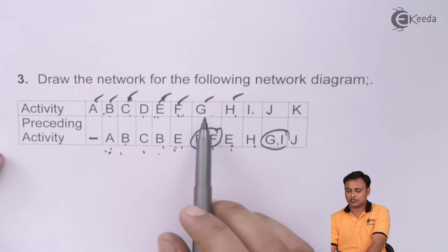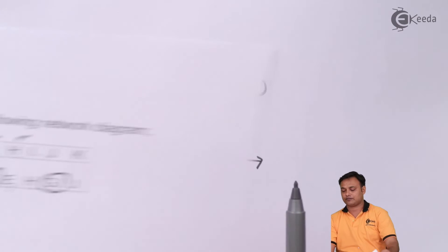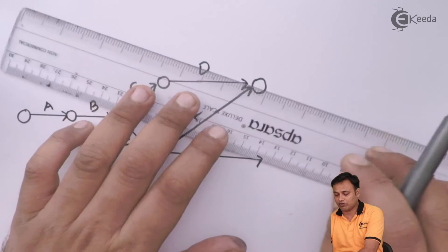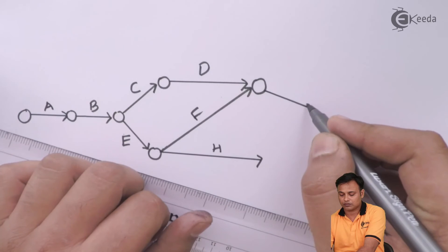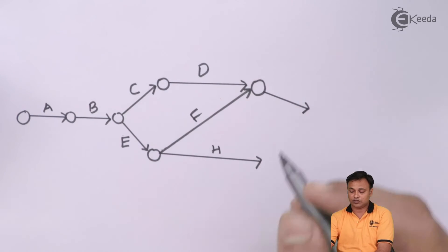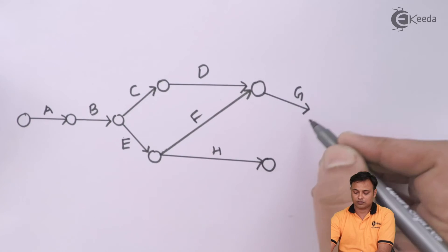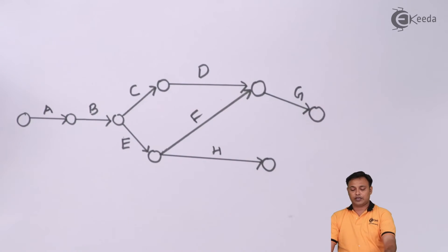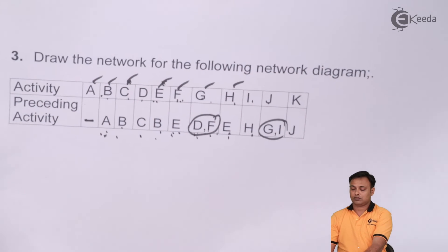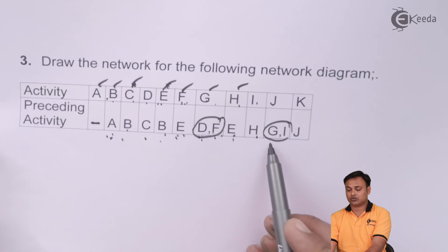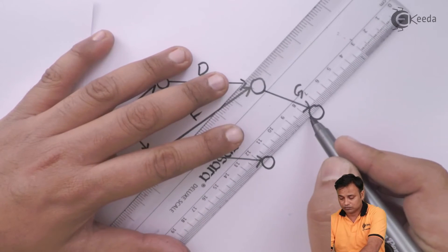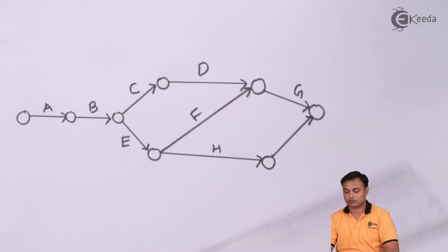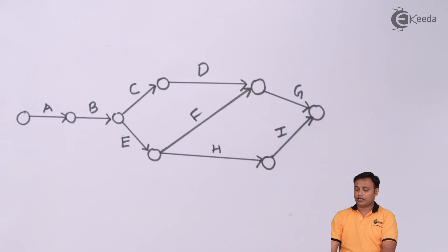F, G starts after completion of D and F. D and F I have joined. Then I need to draw H, after I, I need to join G and I. H after I will put it here. This is my I. G and I will combine and go there.